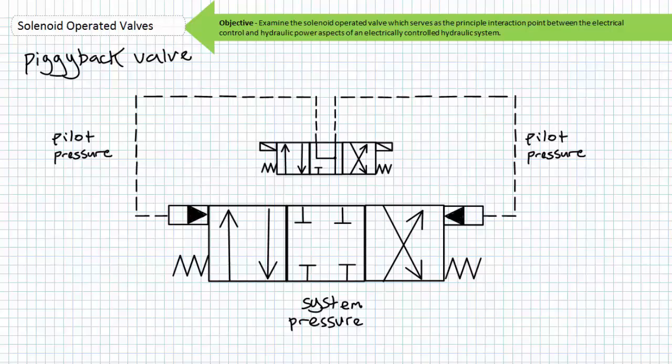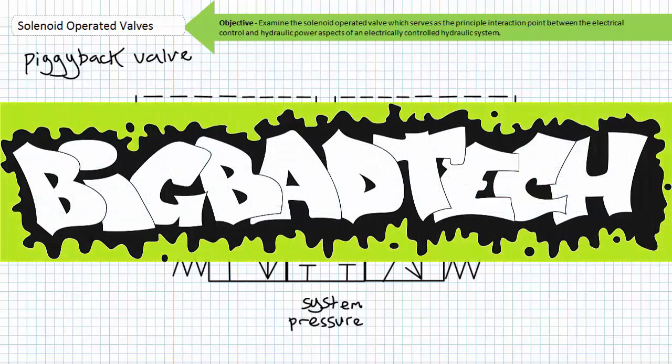This wraps up our brief introduction to the solenoid operated valve. We'll be making use of this device in later lectures as the principal interaction point between the electrical control and hydraulic power aspects of an electrically controlled hydraulic system. In conclusion, this lecture took a brief look at the solenoid operated valve. We identified the purpose and function of the solenoid, the coil, and the valve on both electrical and hydraulic schematics and disassembled and examined a representative example. Additionally, we discussed coil and valve specifications and construction and contrasted general purpose solenoid operated valves with detented solenoid operated valves, the piggyback valve, and variable solenoid operated valves like the proportional and servo valve. Remember to review these concepts as often as you need to really drive it home. Imagine how well lab will go if you know what you're doing. Thank you very much for your attention and interest and we'll see you again during the next lecture of our series. Remember to tell your lazy lab partner about this resource and be sure to check out the Big Bad Tech channel for additional resources and updates.